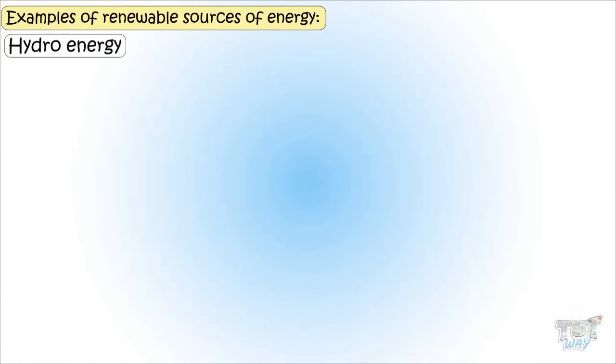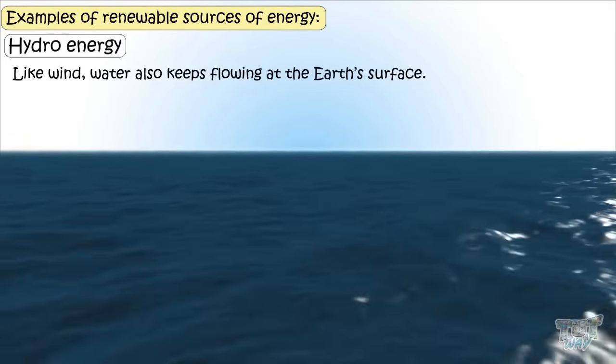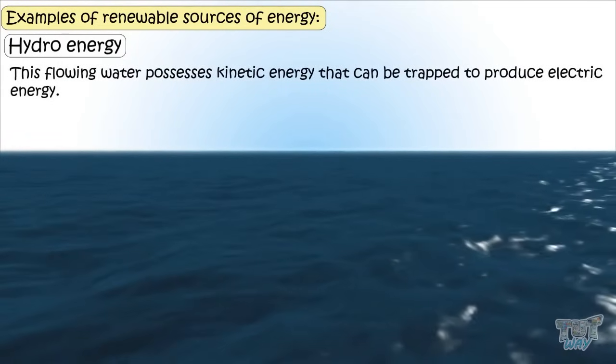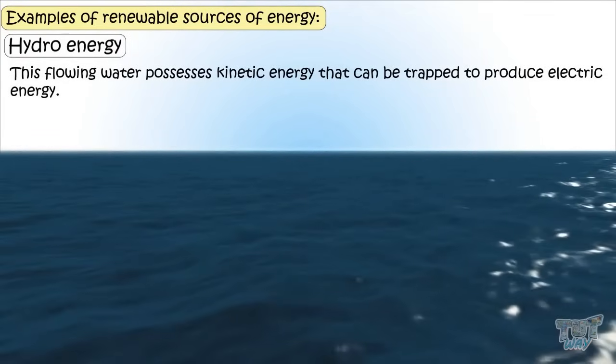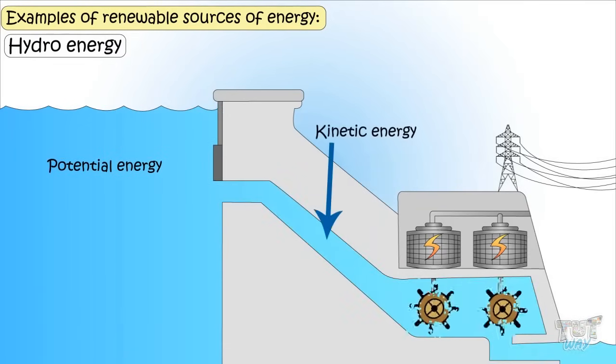Now let's learn hydro energy. Like wind, water is also always flowing on Earth's surface. And this flowing water possesses kinetic energy that can be trapped to produce electric energy. Big dams are created to trap the potential energy of water and convert this potential energy of water to kinetic energy of water, which is then used to produce electricity.